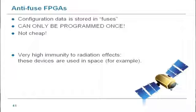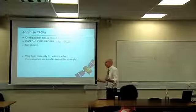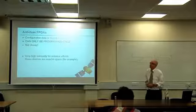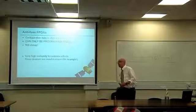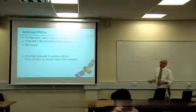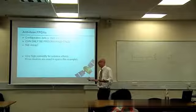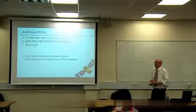Anti-fuse FPGAs can only be programmed once, but have very high immunity to radiation. You program them once, they take on the configuration you want, and you can't change that hardware configuration. These are rad-hard. Some of the other types also have claims for radiation hardness and are getting better, but traditionally ESA, NASA and similar organizations use anti-fuse types in space-based systems.